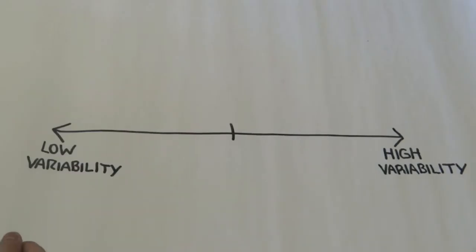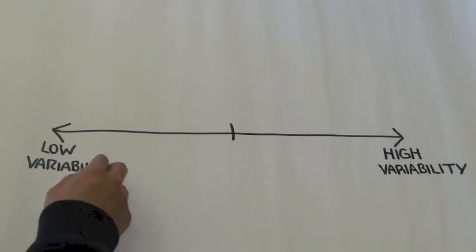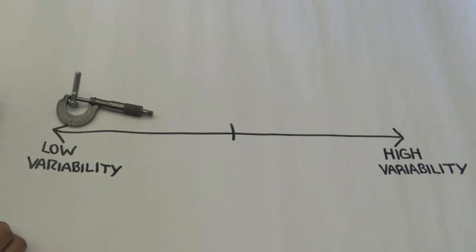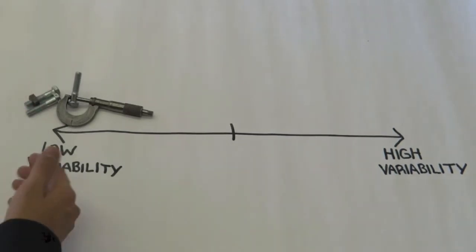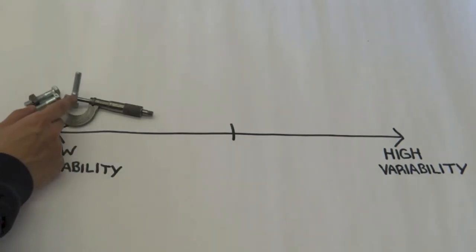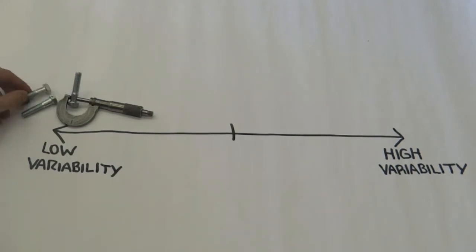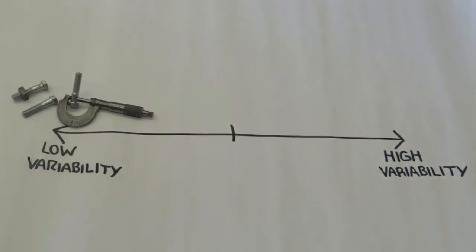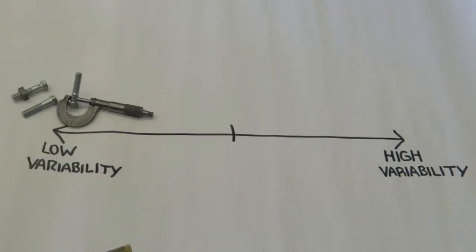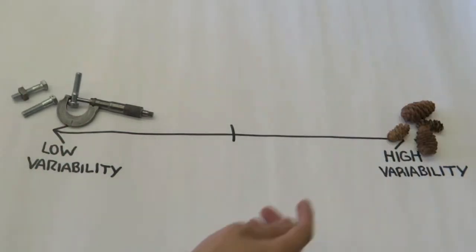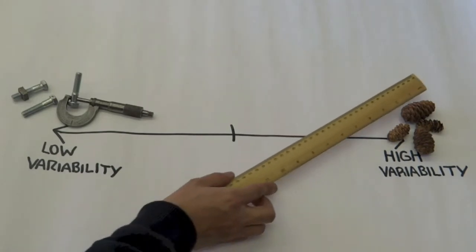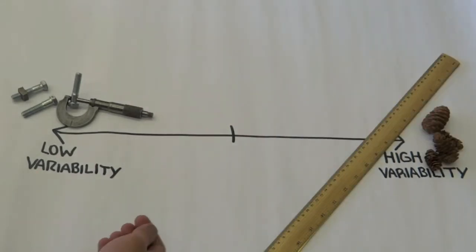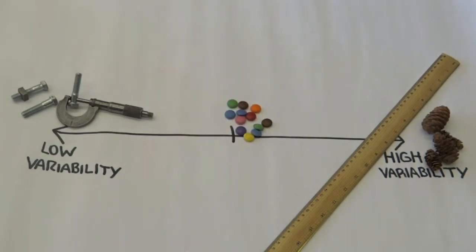Objects can fall in a range of variability ranging from low to high. For example, these nut bolts here show a very low variability in diameter, because the bolts should be able to fit in perfectly with the nuts. In contrast, pine cones can show a high variability in their length. Lastly, the weight of the Smarties will be somewhere in the middle.